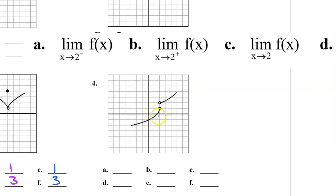Problem number 4. Let's see what happens as x approaches 2. As we approach 2 from the left we approach a y value of 1. However, as we approach 2 from the right we approach a y value of 2. Because the limit from the left and the limit from the right are different, the overall limit as x approaches 2 does not exist.